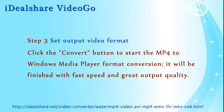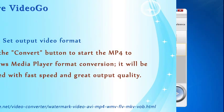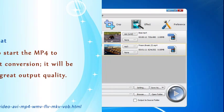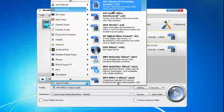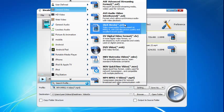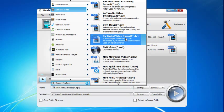Step 3: Set output video format. Click the convert button to start the MP4 to Windows Media Player format conversion. It will be finished with fast speed and great output quality. You can select AVI as the output profile to keep the watermarked video in the same format as the original, or you can select another video format as the output profile.